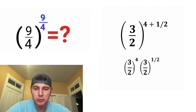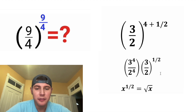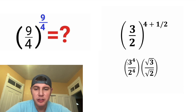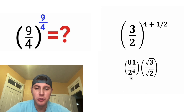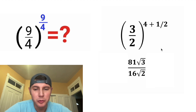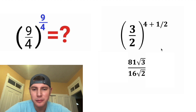This 4 can go to both the 3 and the 2. And then a 1 half exponent means the same thing as square root, so we can distribute a square root to both of those. 3 to the 4 is equal to 81, and 2 to the 4 is equal to 16. And now we can multiply across to give us 81 root 3 over 16 root 2.